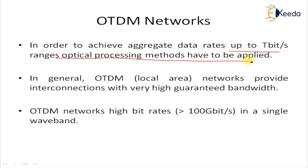In order to achieve aggregate data rates up to the tbps range, optical processing methods have to be applied, thereby removing the conversion between the electrical and optical domain in the optical signal path. A very promising technique in this context is optical time division multiplexing, which has aggregate capability beyond the reach of high speed electronics.